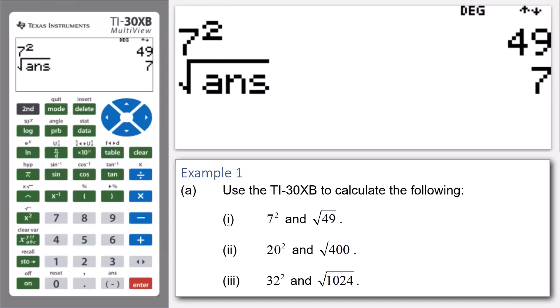Now, let's see what happens when we repeat that for 20 and for 32. We enter 20, press the X squared button, and then press enter, and 20 squared is equal to 400.